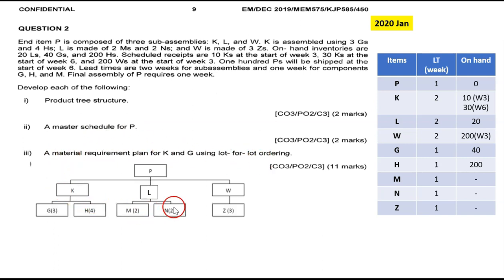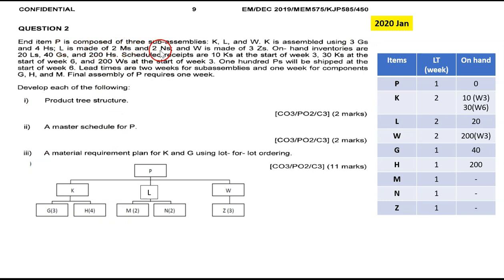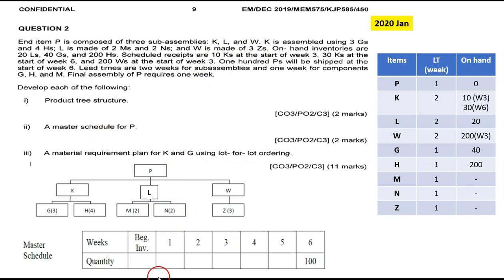When we draw the product tree, P is the final product, K, L, W are the sub-assemblies. From here we know that K uses 3G and 4H, L uses 2M and 2N, and W uses 3Z. Now we're going to do the MPS. For the MPS we know we have at week 6, 100 P. MPS is usually for the final product, which in this case is P.